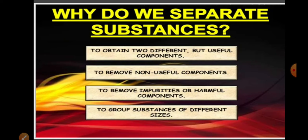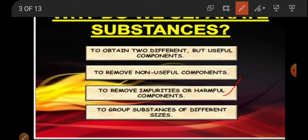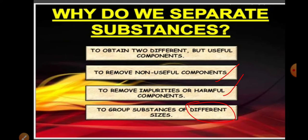Matter can exist in mixture form, and we are always trying to separate mixtures into their pure substance form so that we can remove harmful particles and impurities. We also separate substances to get substances of different sizes and shapes, and to gain knowledge about pure substances so we can study them further in detail. These are the different uses of separation of substances.